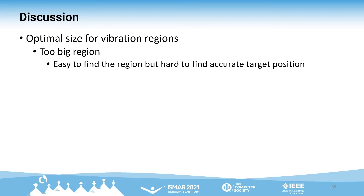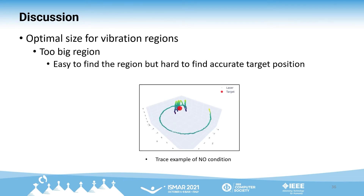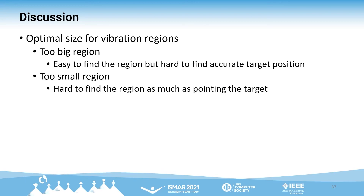Although we tried to map the vibrating region based on the size and distance of the target, we believe the region can be optimized. If the region is set too large, it can be found easily but the search space within it is still too wide to find the accurate target position — we noticed the blue region in any condition was set too wide, causing zigzag motion near the target. On the other hand, if the region is too small, users would not benefit from the additional cue since finding the region can be as difficult as finding the target.